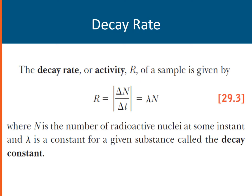The first concept that involves computation for this lesson is the decay rate. The decay rate, or activity, which is symbolized by the letter R, is defined as the number of decays per second. We have the equation R, or the absolute value of delta N over delta T, is equal to lambda N.